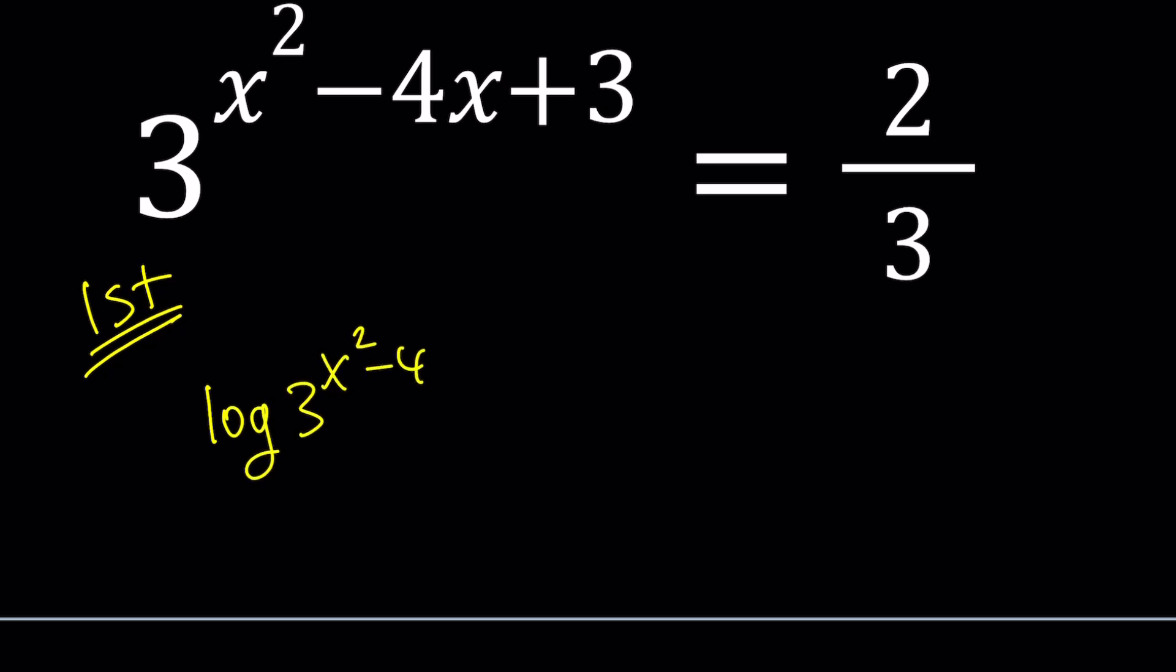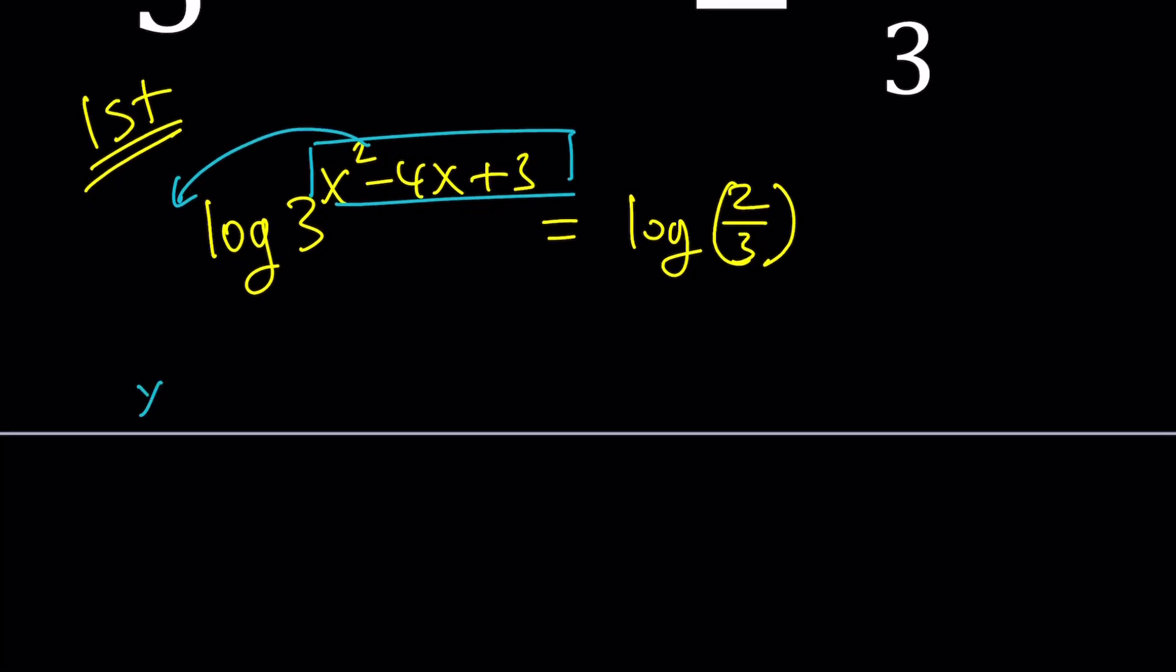Log is base 10. So, it's not written. We're going to log both sides. On the left, we can go ahead and bring this to the front. It's the properties of logarithms. Hopefully you know them. x squared minus 4x plus 3 multiply by log 3 equals log 2 thirds.